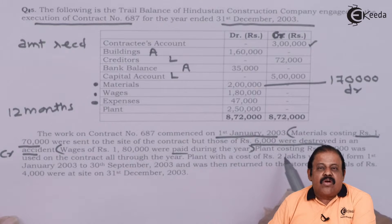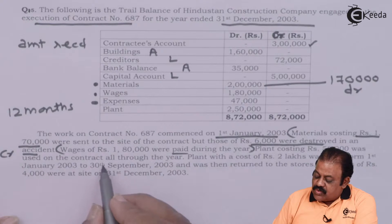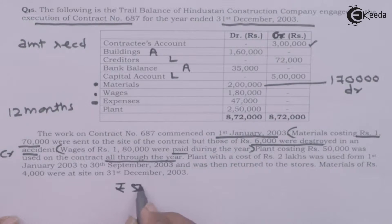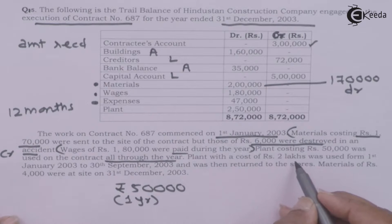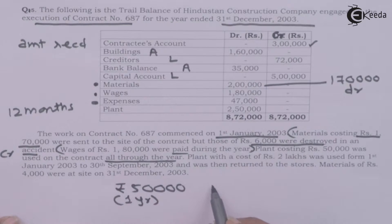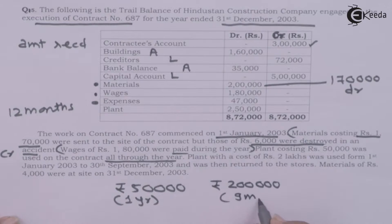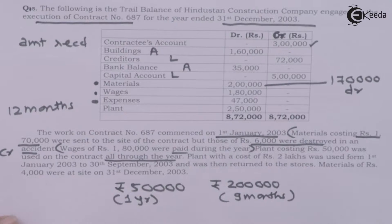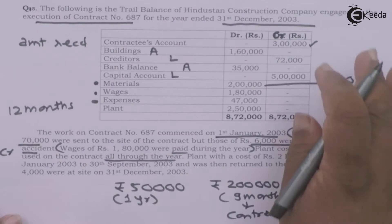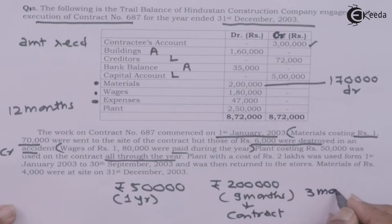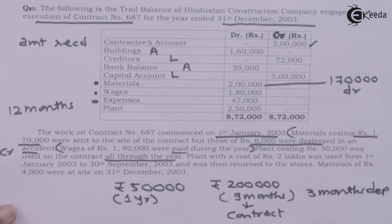Plant costing 50,000 was used on the contract throughout the entire year. Out of the total plant of 2 lakh 50,000, plant of 2 lakhs was used from 1 January up to 30 September — that is, for nine months — so nine months' depreciation will be charged to the contract account. The balance three months' depreciation, which is not related to the contract, will be charged to the profit and loss account.